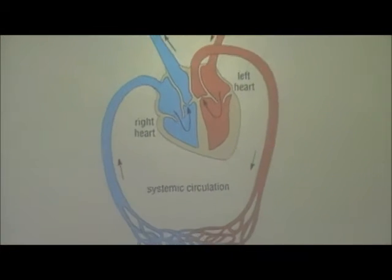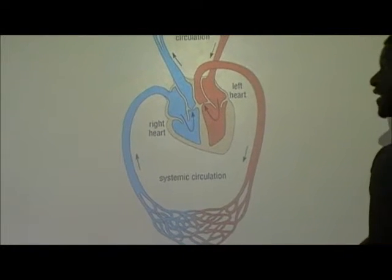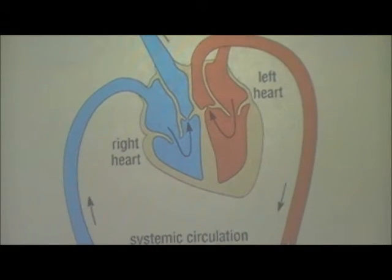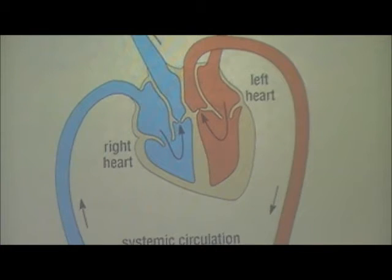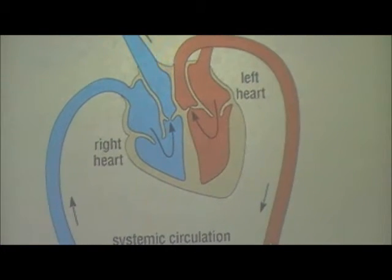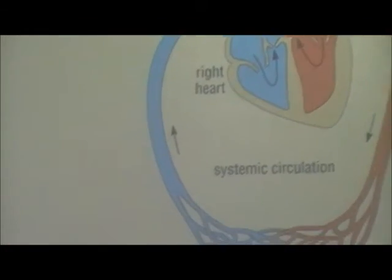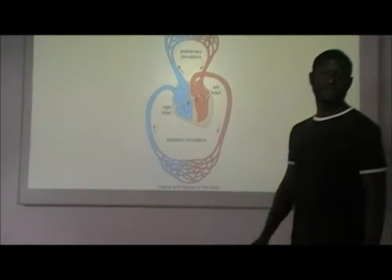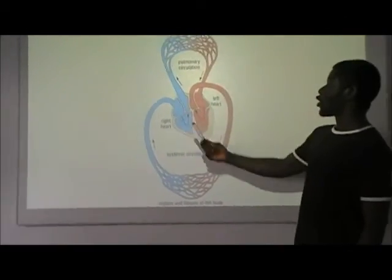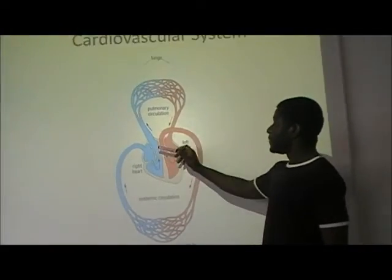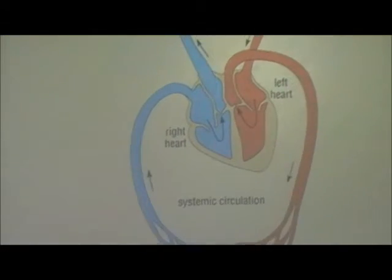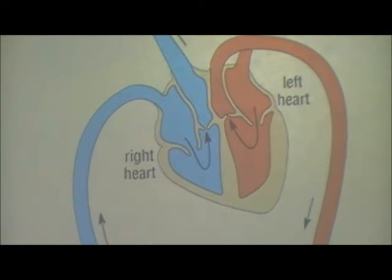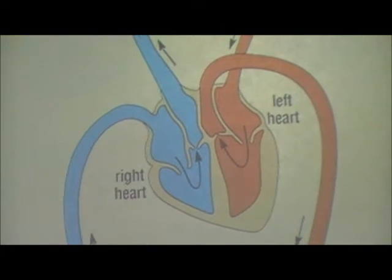Starting from the right side of the heart — more specifically, the right atrium, the top part of the heart — it receives deoxygenated blood from the rest of the body via the inferior and superior vena cava. The inferior vena cava is at the bottom and the superior is above it. These channel deoxygenated blood back to the right atrium. When the atria contract, the blood gets channeled into the right ventricle through the tricuspid valve, which prevents the backflow of blood from the ventricle back up into the atrium.